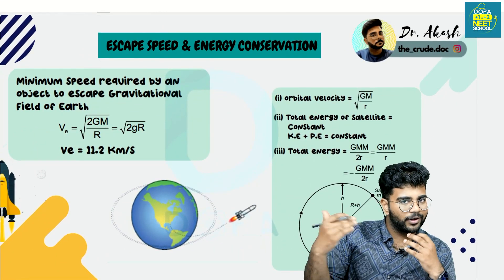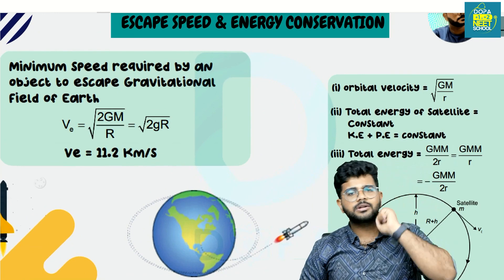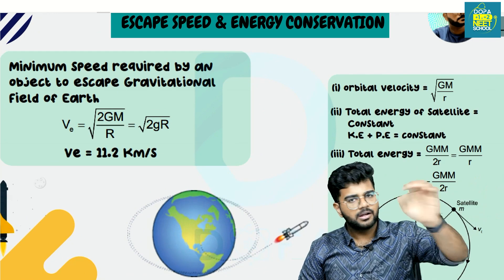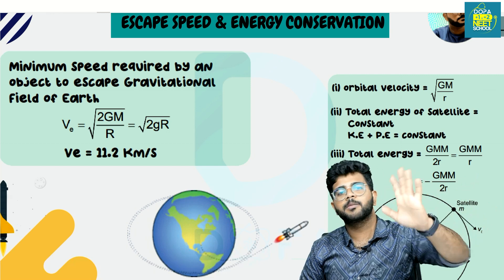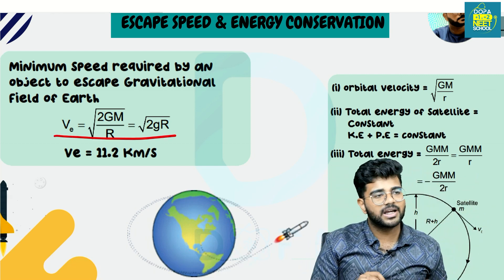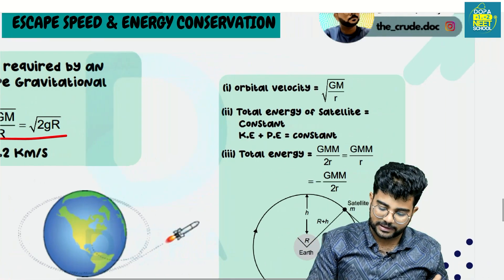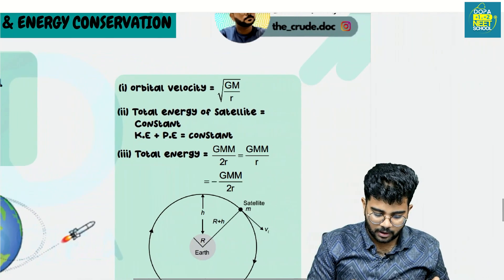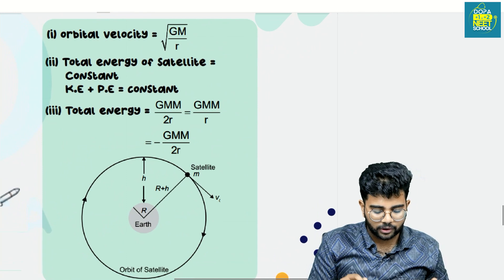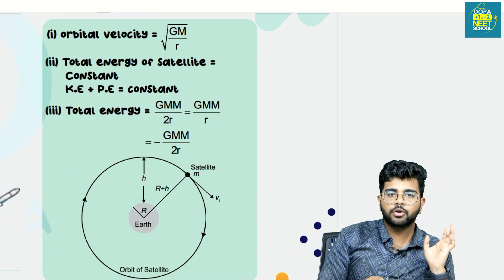Escape velocity is the minimum velocity required to escape the gravitational force of an object. It is approximately 11.2 km per second. Next is orbital velocity, and then the total energy of satellites — these are all key topics.